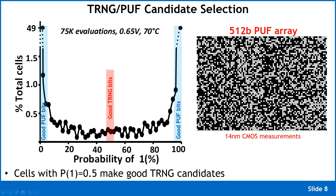This bathtub curve — typical in PUF literature — shows that you only want to use cells at the extremes, which consistently produce a zero or a one. Everything else is normally discarded. But cells biased right in the middle with a 50% probability of producing a zero or one are potentially good TRNG bits — why not harness that entropy?